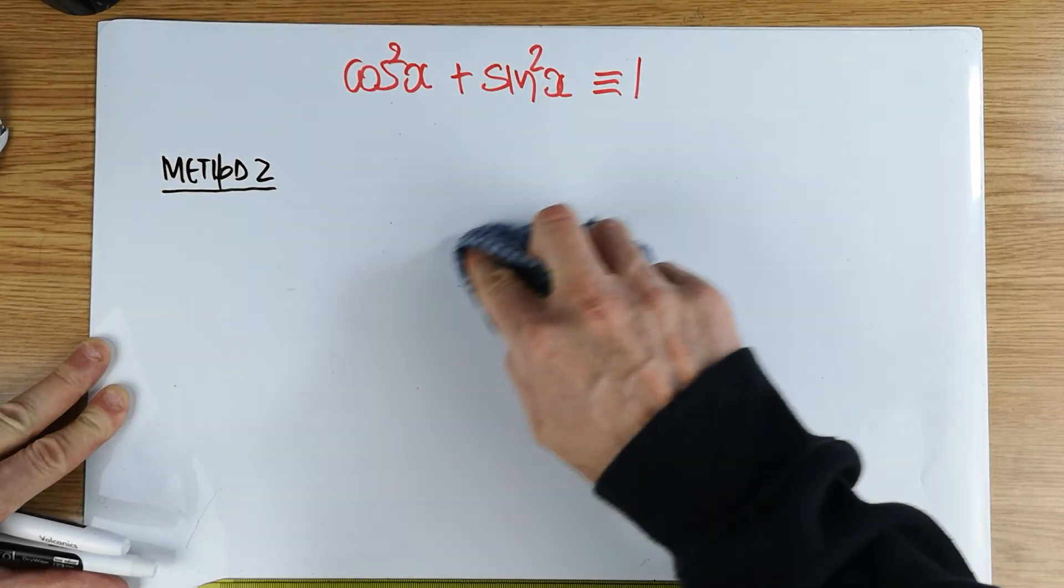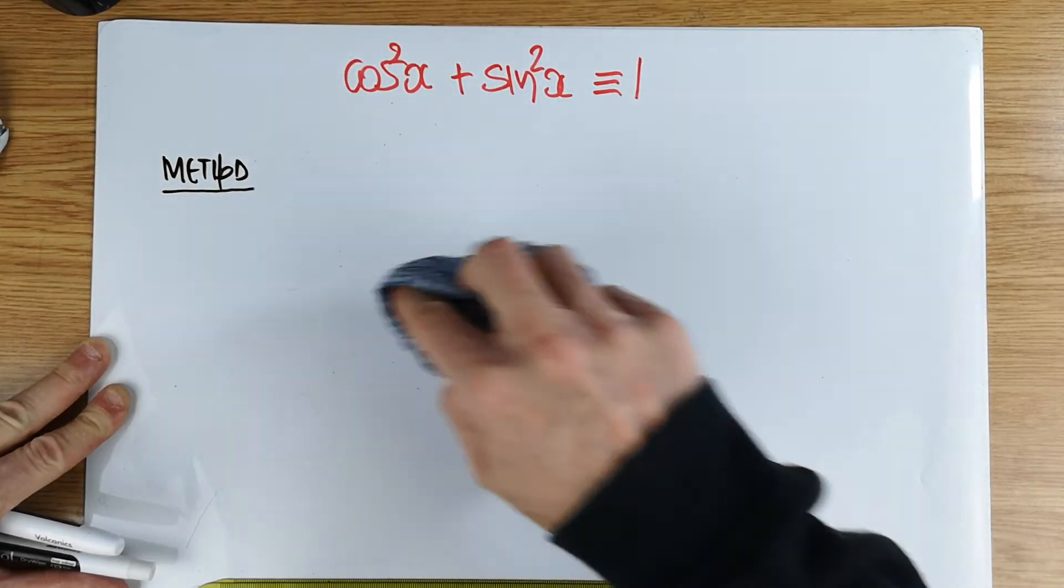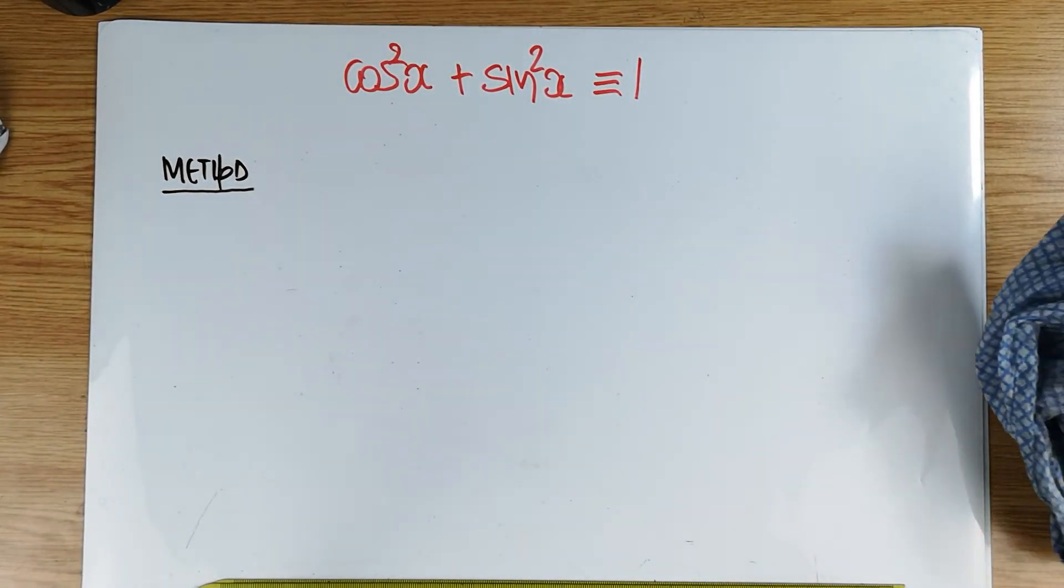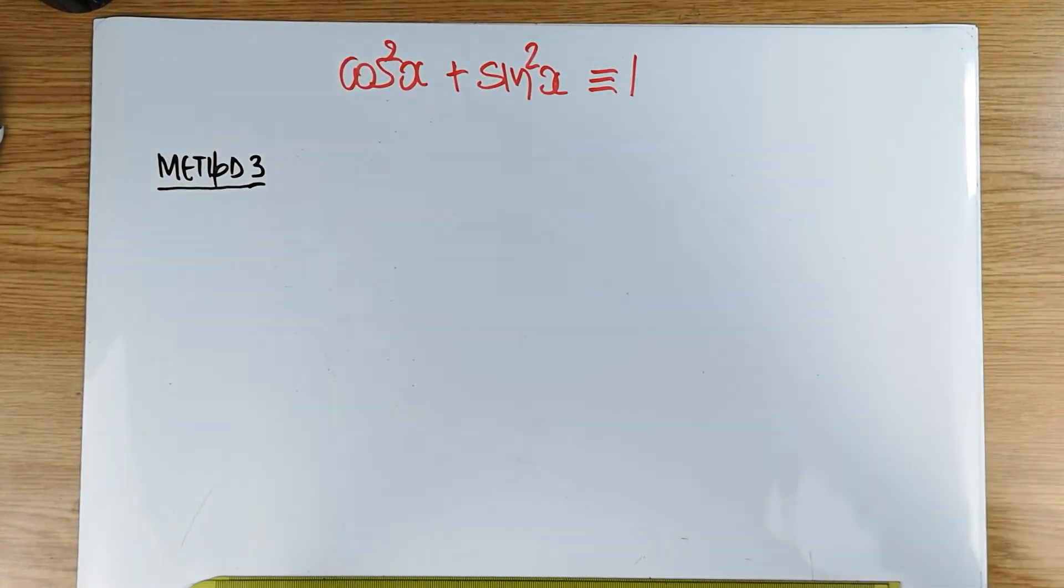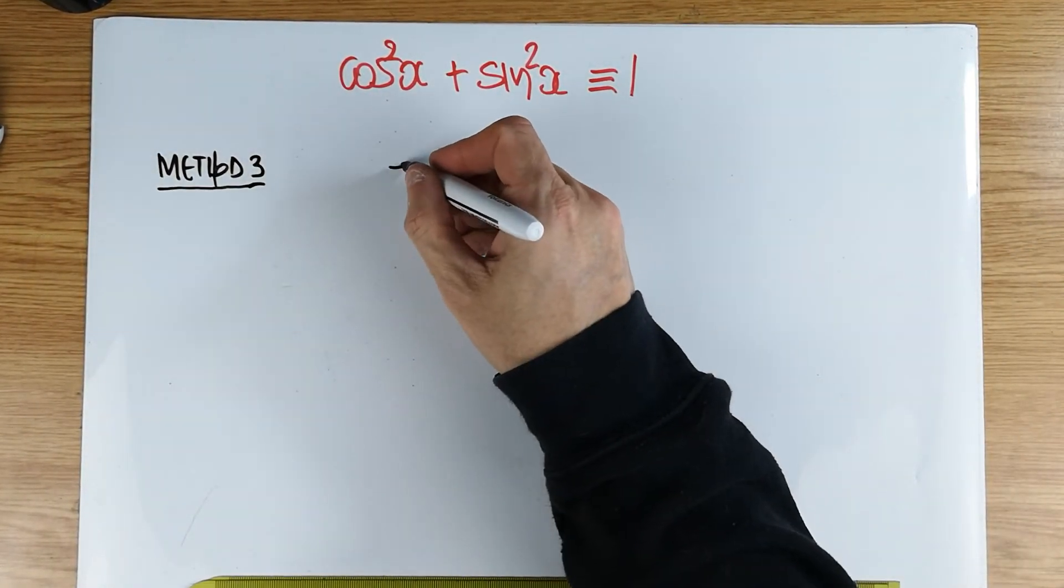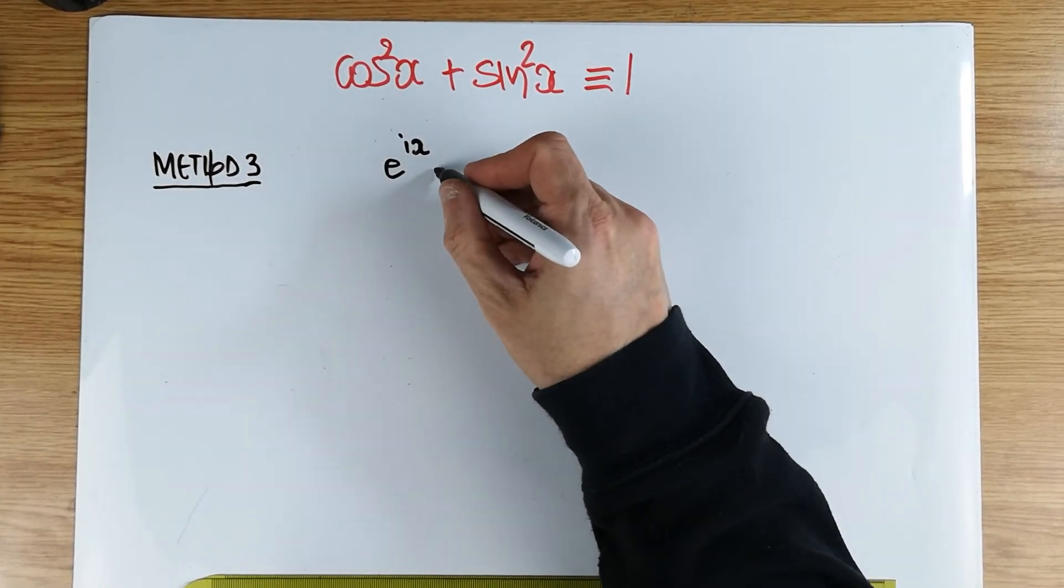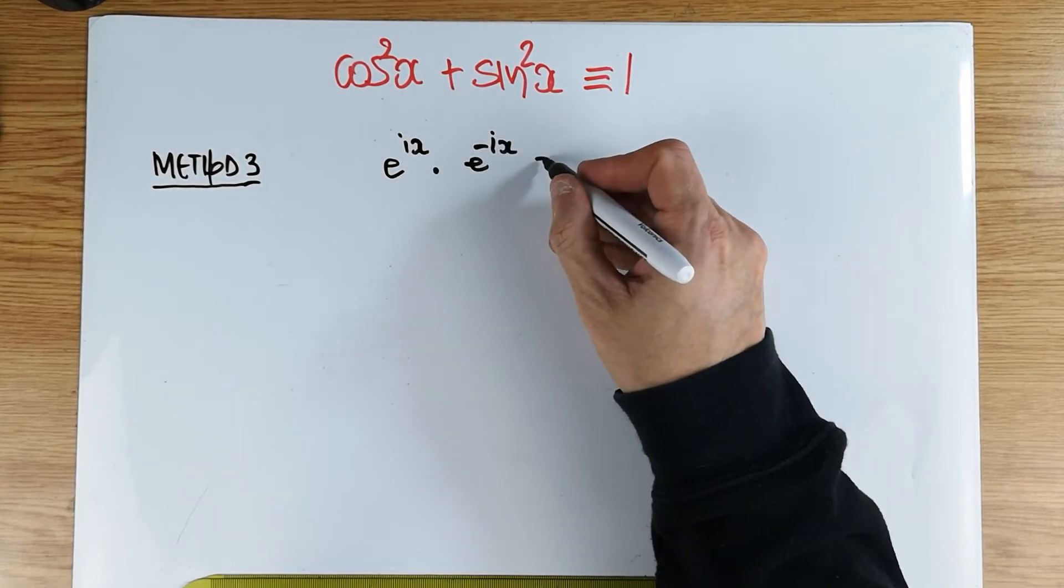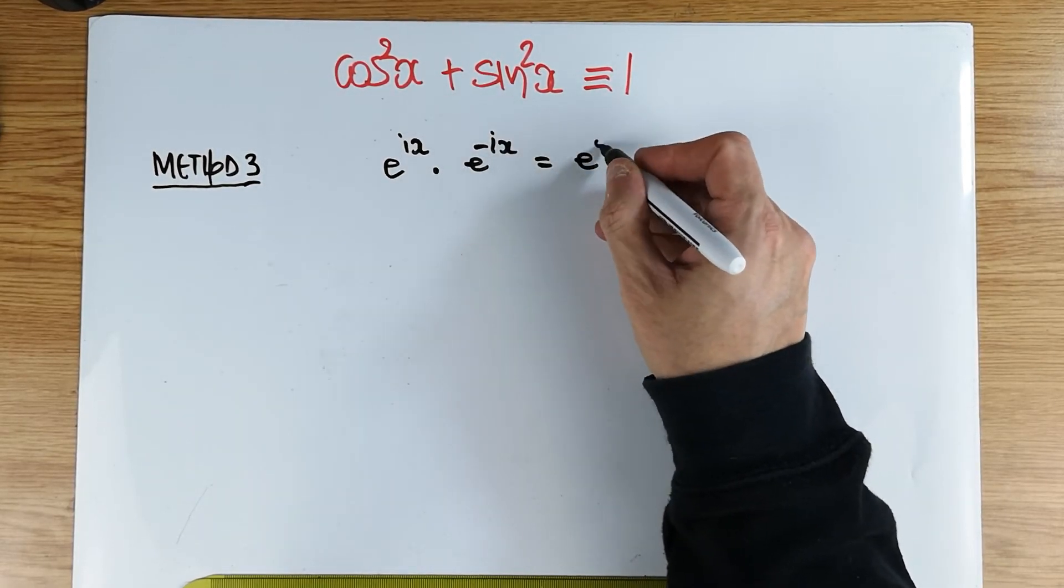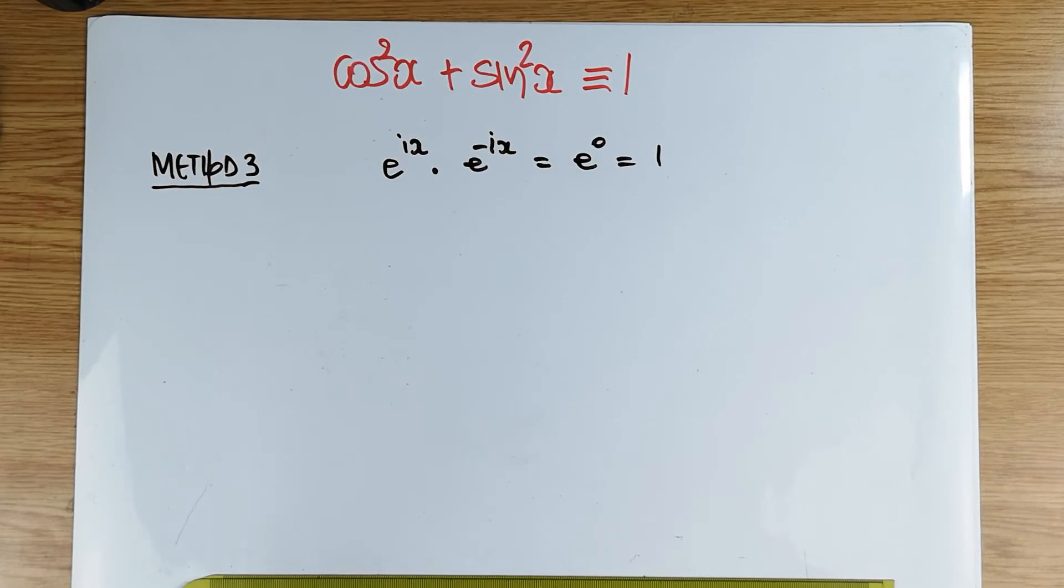We're going to start as follows. e to the ix times e to the minus ix is, of course, is equal to e to the zero, which, of course, is equal to one. No problem.